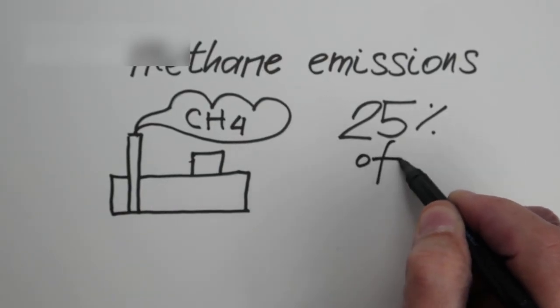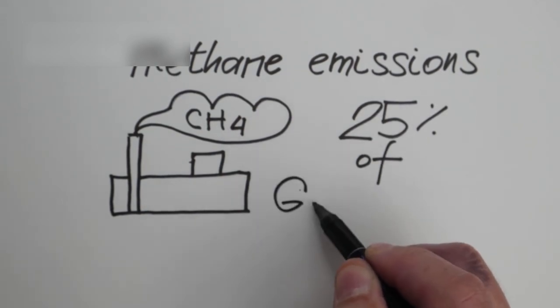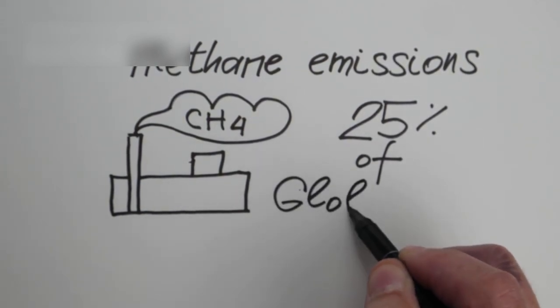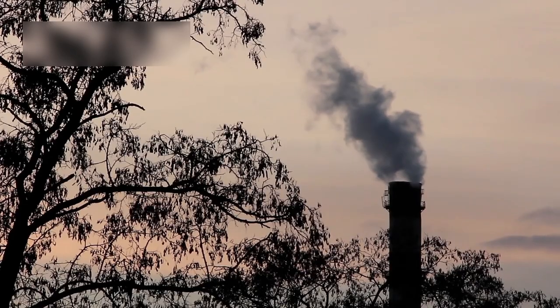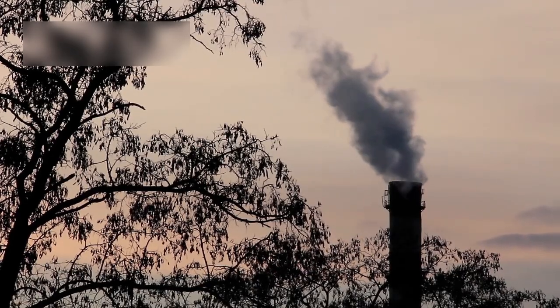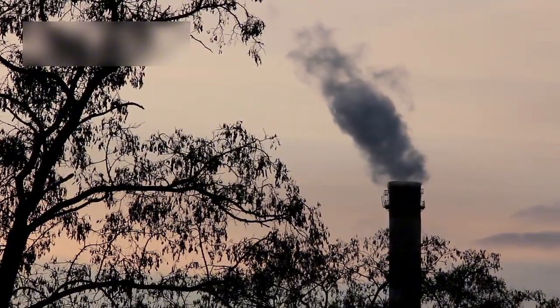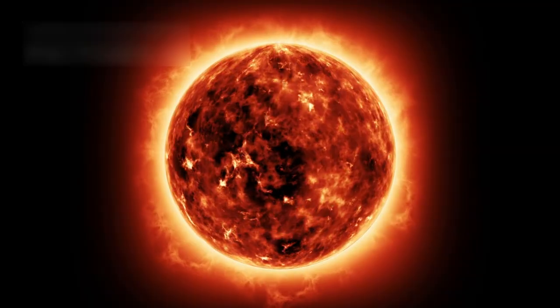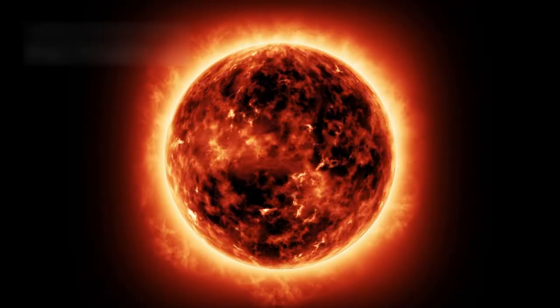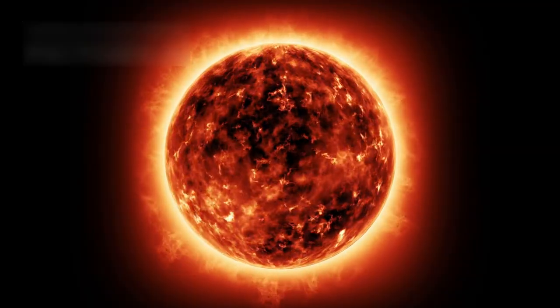Later observations revealed carbon dioxide and methane, gases that on Earth are strongly tied to biological and geological processes. What mattered most was not their presence alone, but the combination in which they appeared. In a hydrogen-rich atmosphere, such chemical mixtures are difficult to maintain without some ongoing source replenishing them.